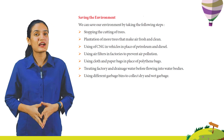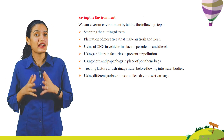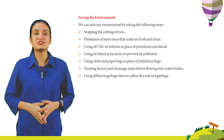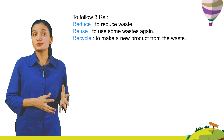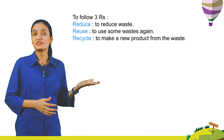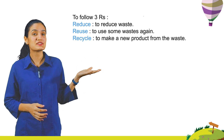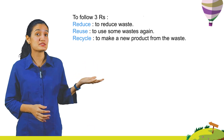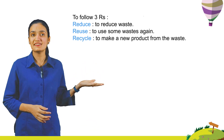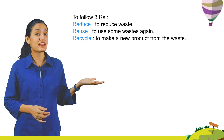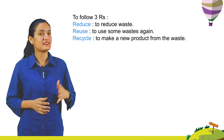We should also treat factory and drainage water before flowing it into water bodies, and use different garbage bins to collect dry and wet garbage. We should follow the three R's: Reduce — to reduce waste; Reuse — to use some waste again; and Recycle — to make a new product from the waste.